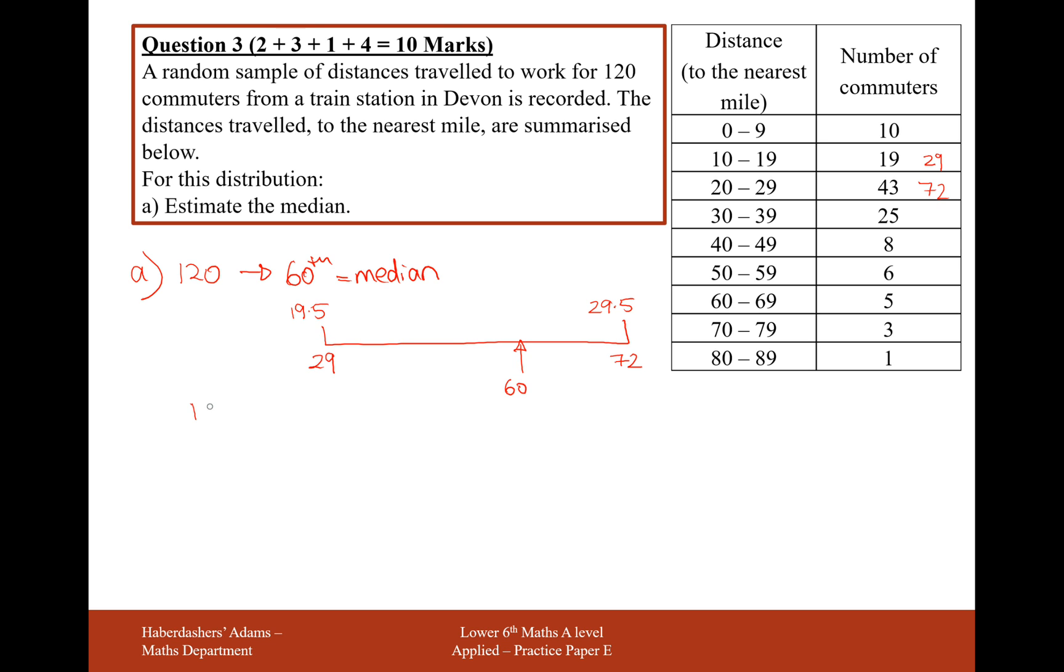So what we want is to start at 19.5 and then work a fraction of the distance into this group. We want to go in by 31 people from 29 into the value of 60, out of a total of this group of 43 people. And so we want to go this fraction into the group, and this group has a width here of 10, from 19.5 up to 29.5. So work out this calculation, and you get 26.7 miles. So the median person travels 26.7 miles to the train station.